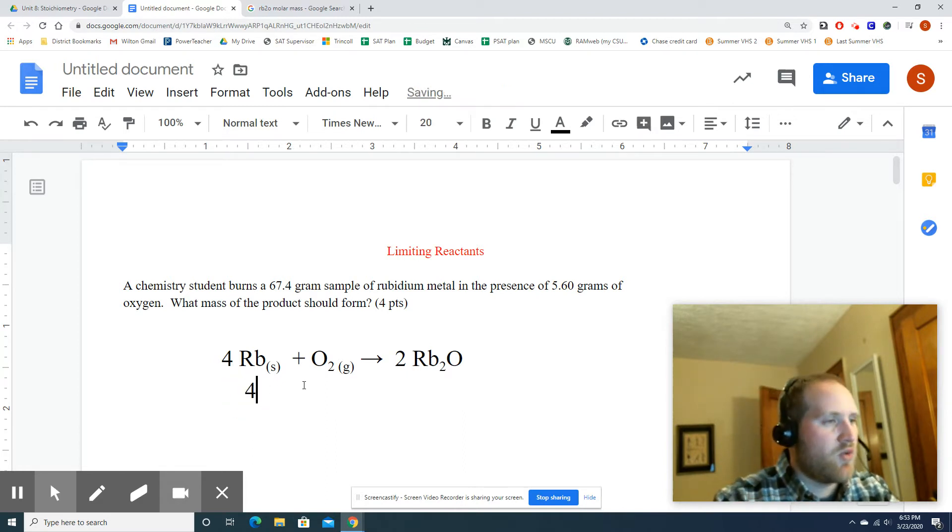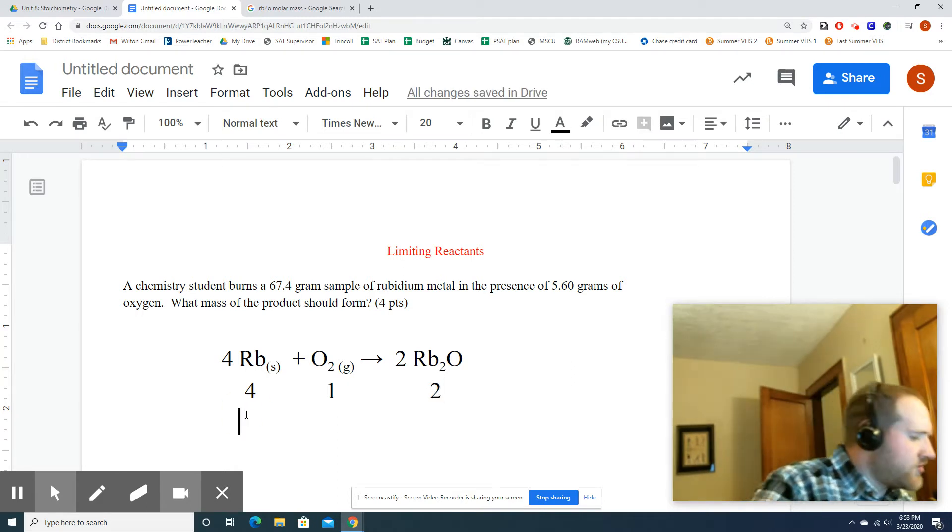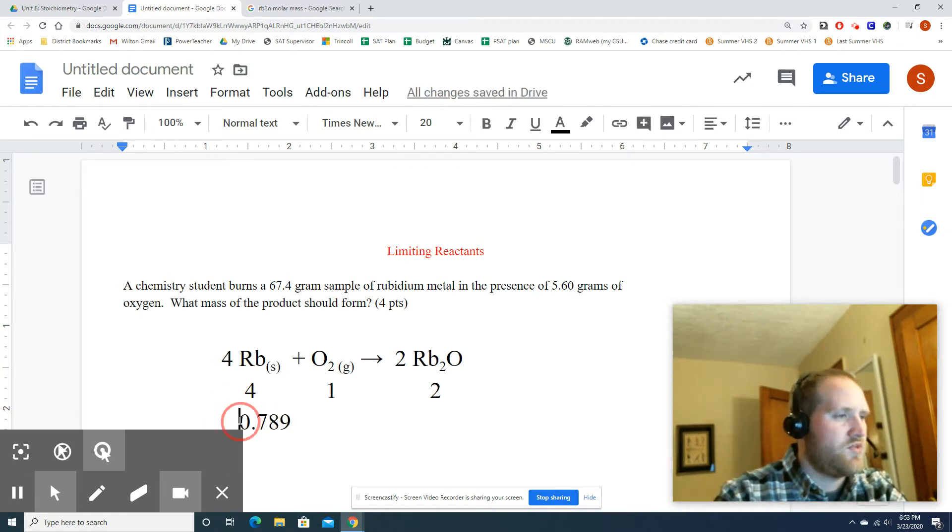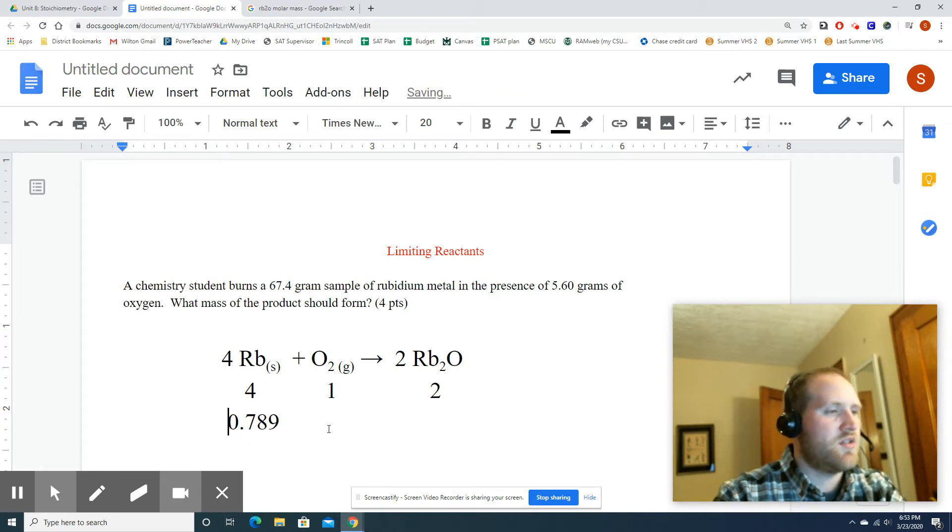Or in other words, you just divide. And that gives me 0.789. Now, what I like to do is actually rewrite my coefficients right below. It really makes them kind of pop. All right, now below these, I'm going to write the moles that I have. So I have 0.789 moles of rubidium.